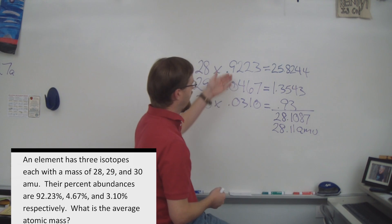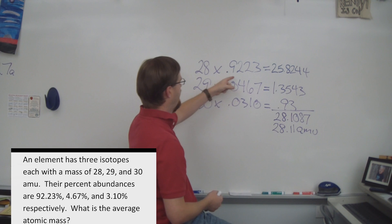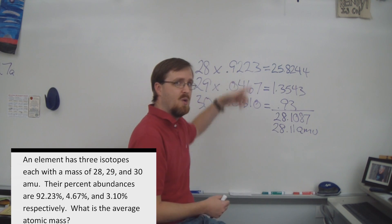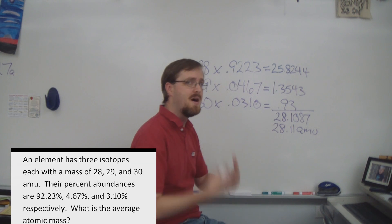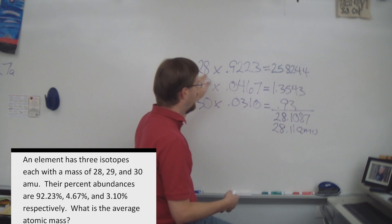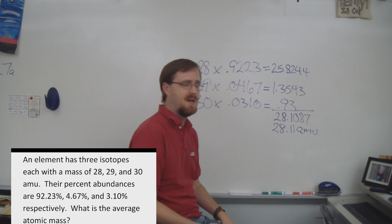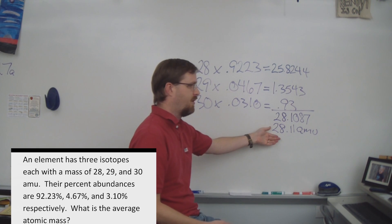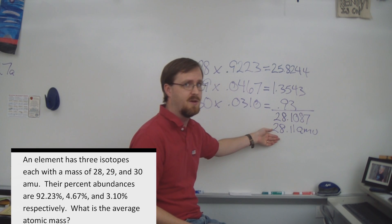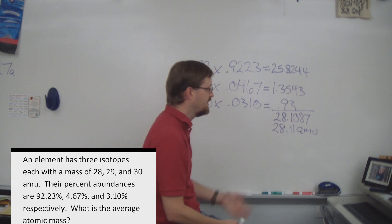The next thing we're going to do is take a look at our percent abundances. Well, the mass of 28 has the largest percent abundance, which means that our answer must be closer to 28 than either of the other two masses. And at 28.11, it is definitely closer to 28 than it is to 29 and 30. So yes, our answer does make sense.